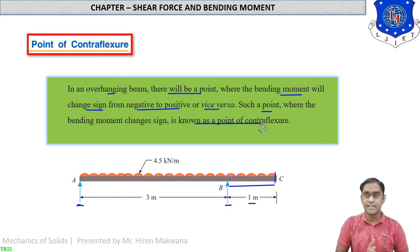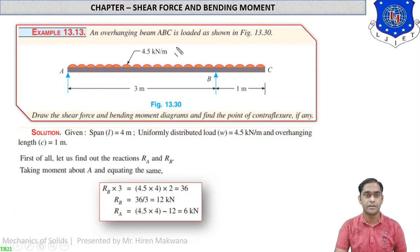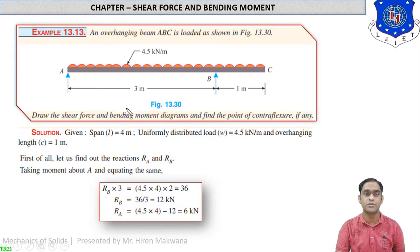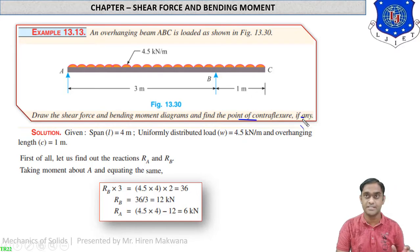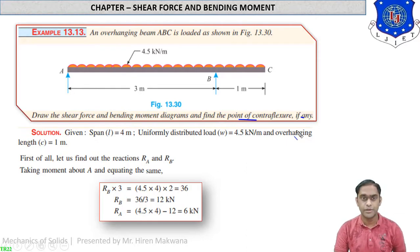Let us see a couple of numericals to understand this phenomenon. Example 13.30: an overhanging beam ABC is loaded as shown in the figure. The beam has length 3 meters between A and B, and 1 meter between B and C. The entire beam is loaded with a UDL of 4.5 kilonewton per meter. We have to draw the shear force and bending moment diagrams and find the point of contraflexure. Note that in an overhanging beam there is always a point of contraflexure.